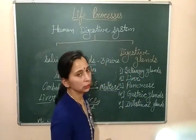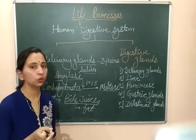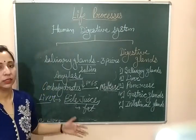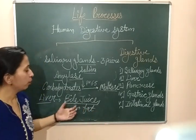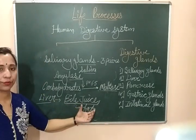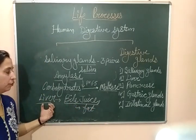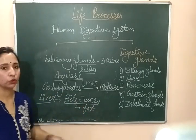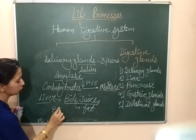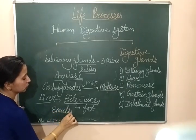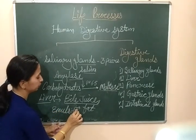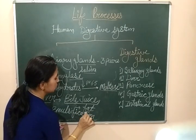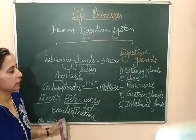Emulsification is the process in which larger fat globules are converted into smaller sizes, so that fat-digesting enzymes can act on them easily. So, liver secretes bile juice and aids fat digestion through the process of emulsification. This is the role of the liver in our digestion process.